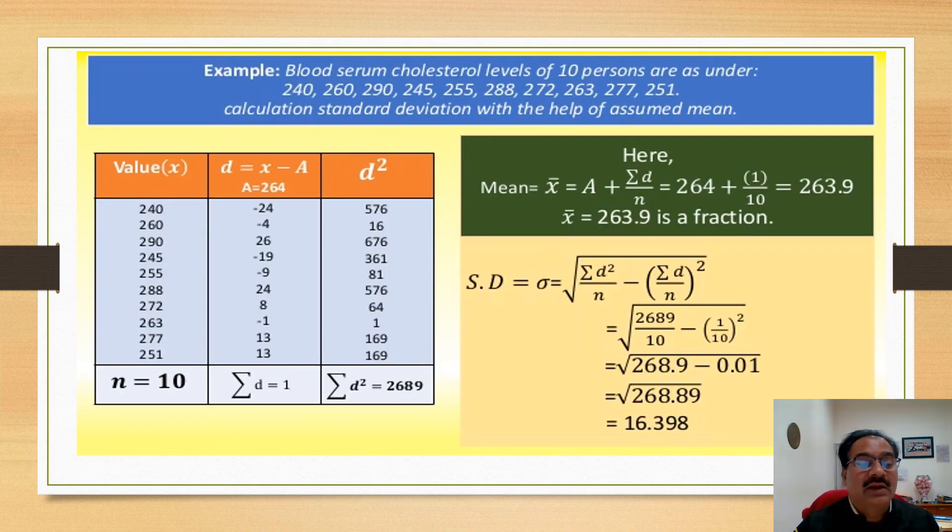Therefore, just you do another problem: the blood serum cholesterol level of 10 persons are as under: 240, 260, 290, 245, 255. This is a very obvious problem. 288, 272, 263, 277, 251. Calculate the standard deviation with the help of assumed mean. Now, values are already given. Total number of observations are 10.